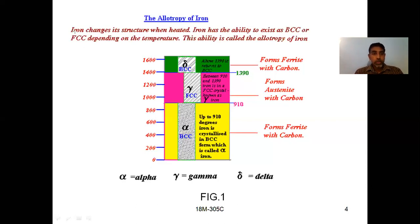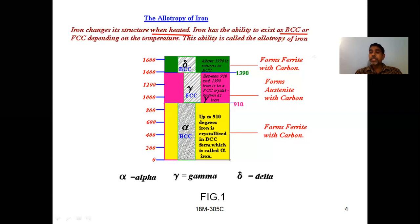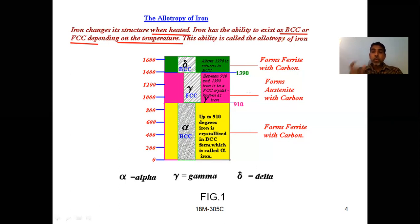Iron changes its structure when heated. Iron has the ability to exist in BCC or FCC structure based on temperature. It may exist in BCC structure or FCC structure. Here it is having BCC as well as FCC based on temperatures, meaning it has polymorphism.